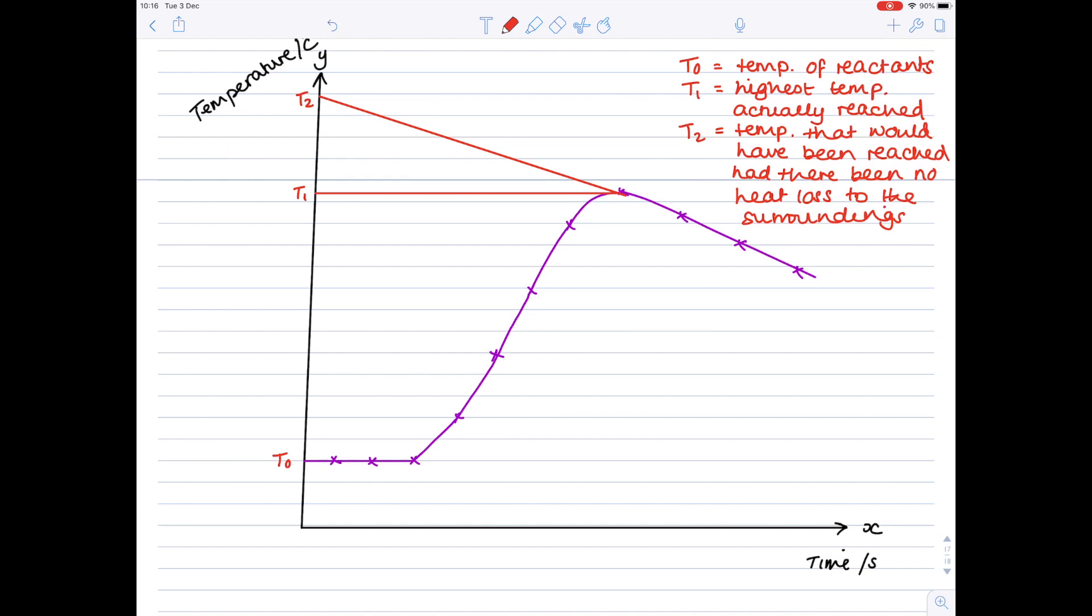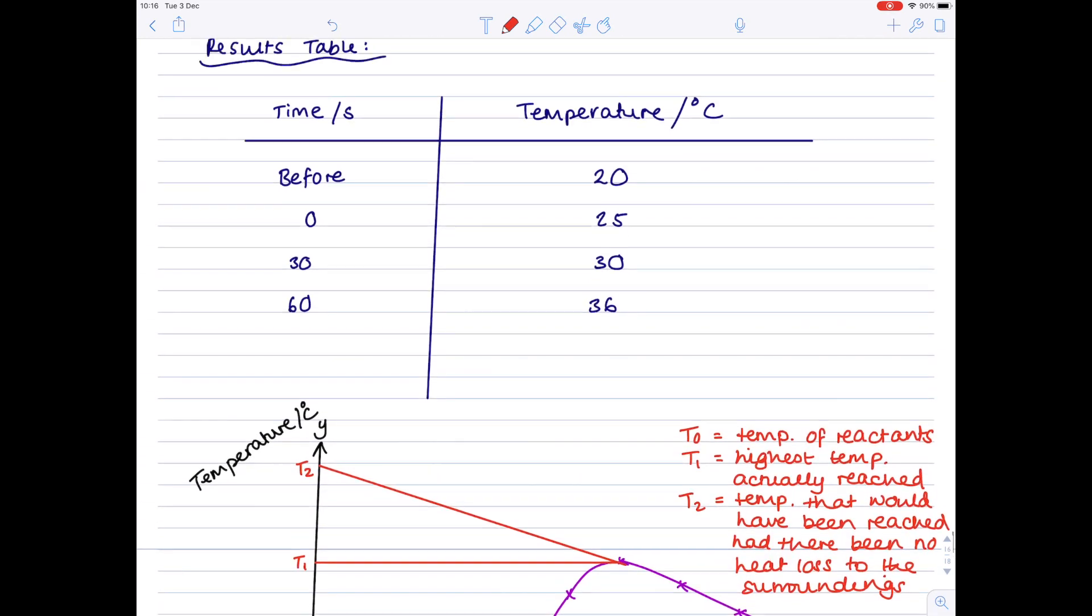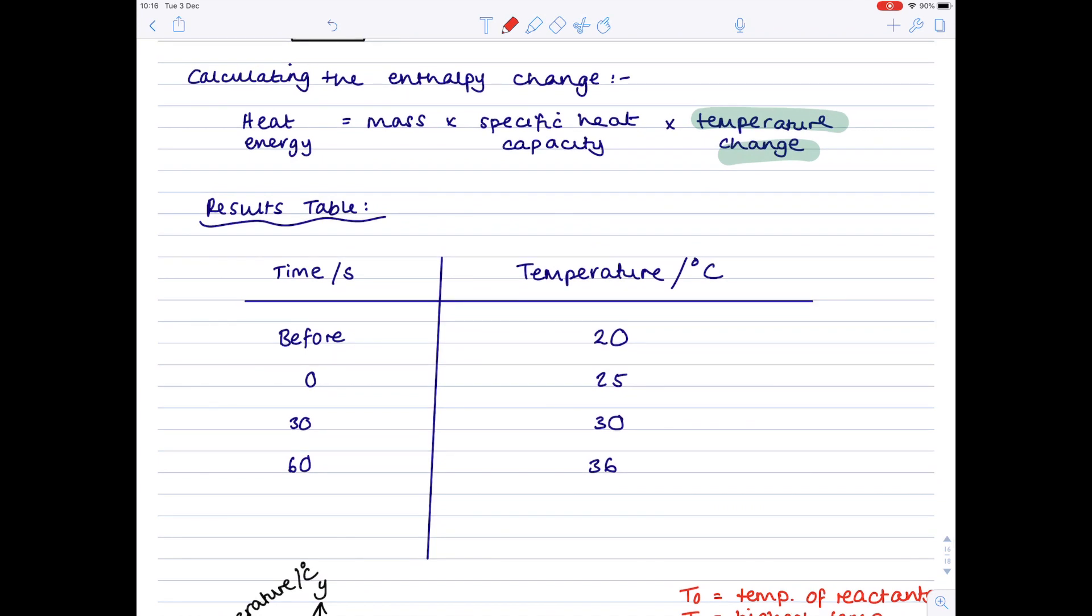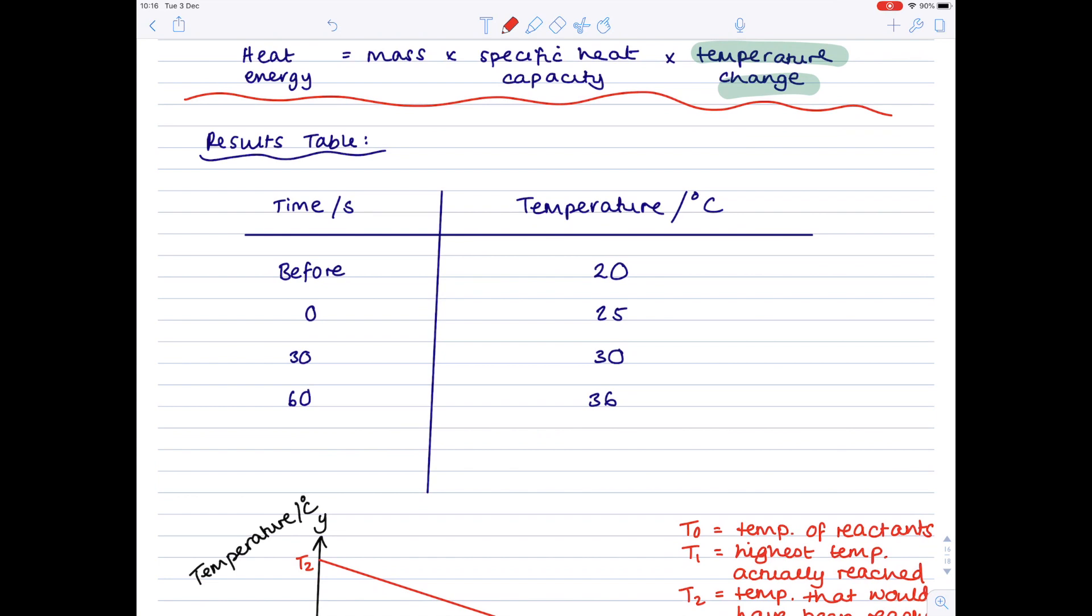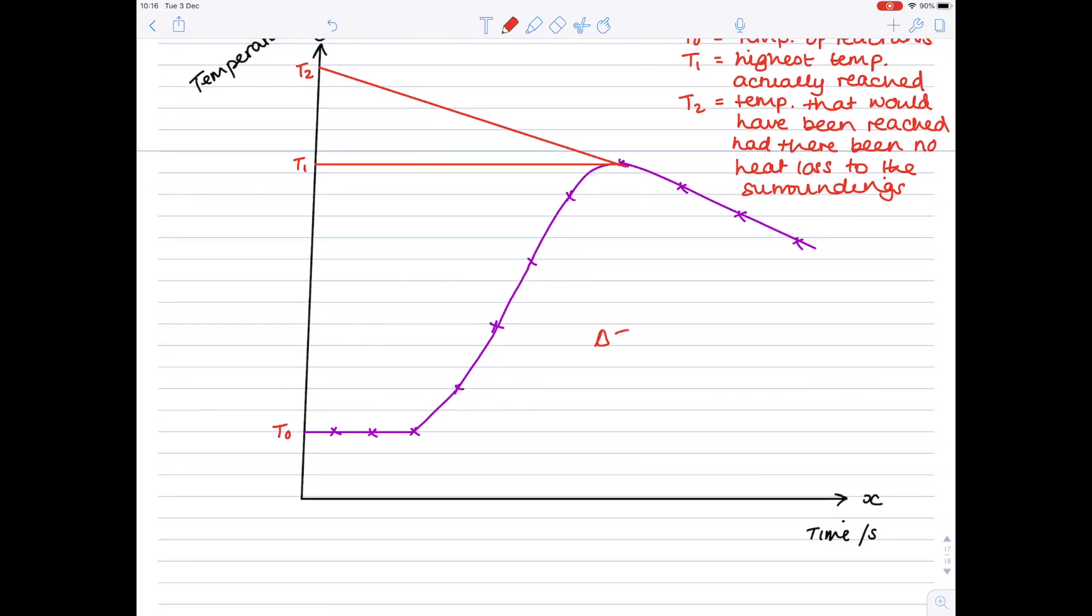So in order to find out that temperature change, which remember we're going to later substitute into this equation up here. That will be another video's content. Then we do change in temperature equals simply that highest theoretical temperature reach minus the initial temperature, which was actually measured. Notice that the reactants were mixed at this point. And like I said, the temperature went up in this reaction because it was a neutralization reaction. And therefore it was an exothermic reaction.